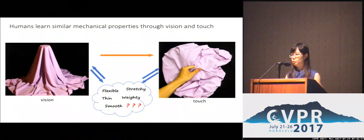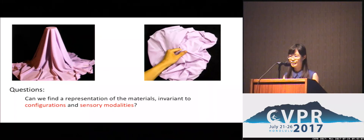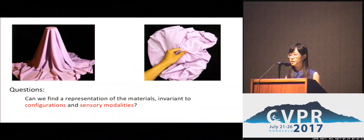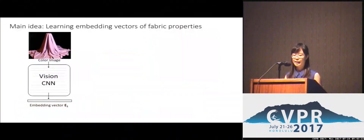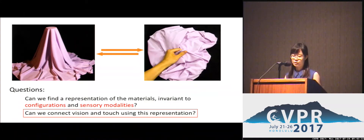These representations help us to imagine what the fabrics would feel like after looking at them, or what they may look like after we feel them. So here we ask: can a computer do the same — find representations of the material properties that are invariant to configurations and sensory modalities? We are especially interested in connecting touch and vision, and predicting what the fabrics will look like or what they will feel like.